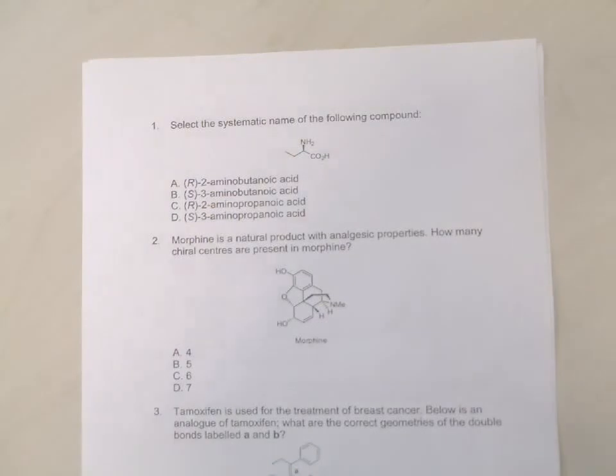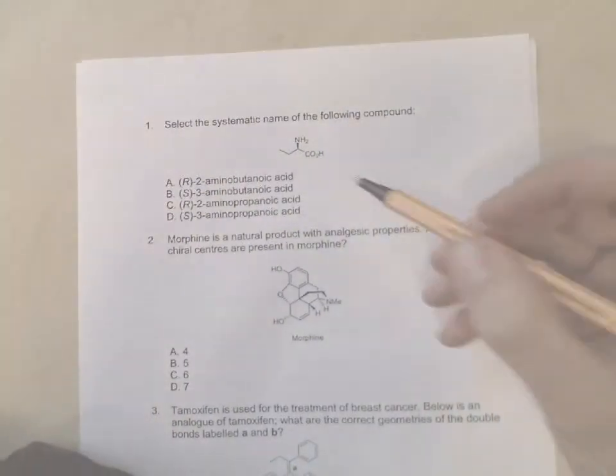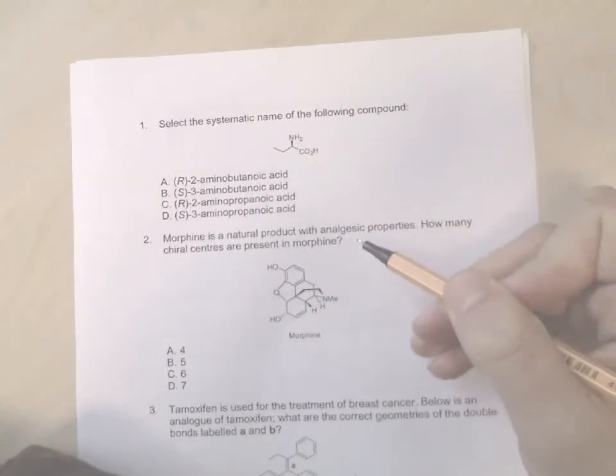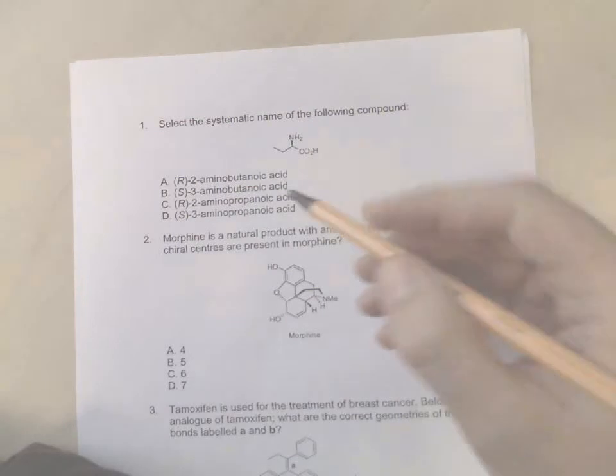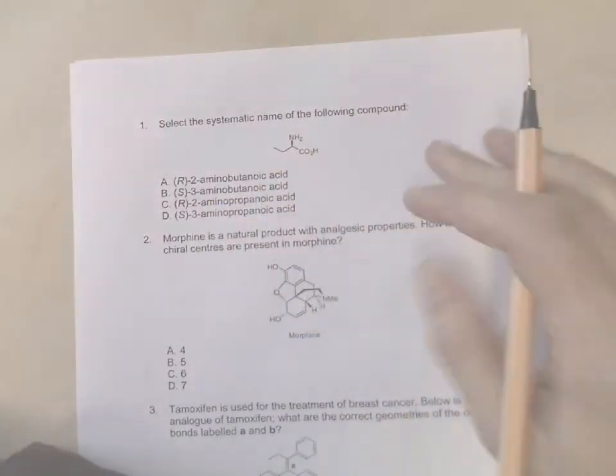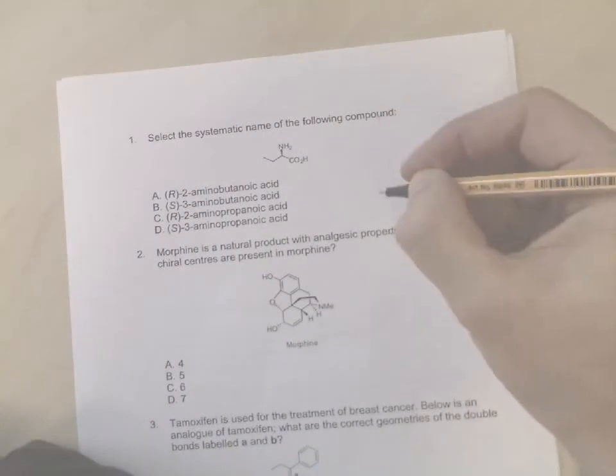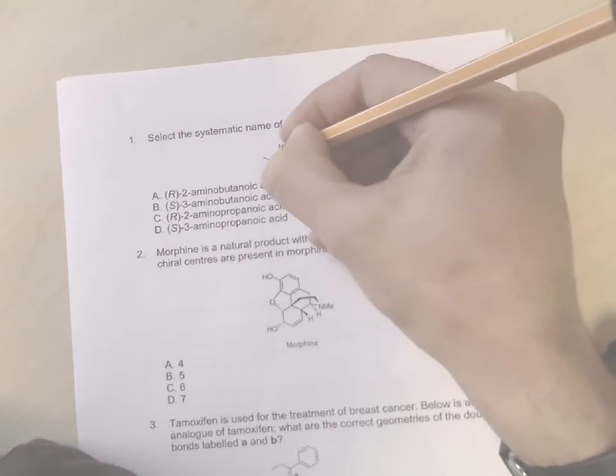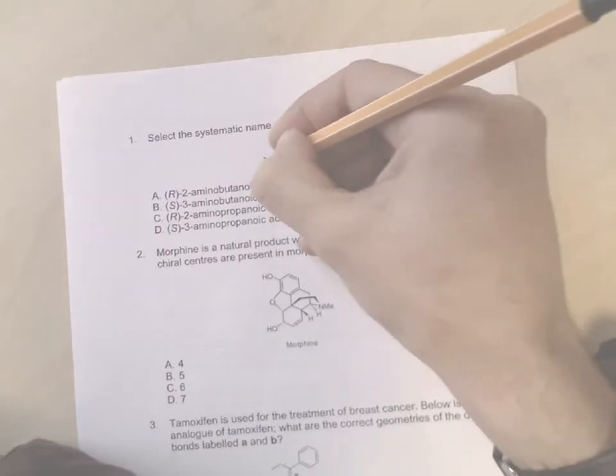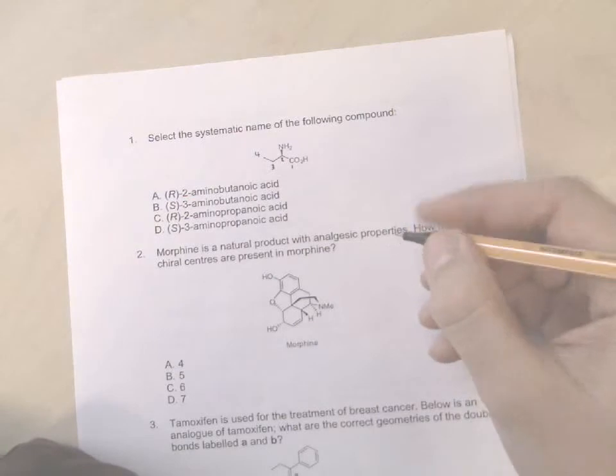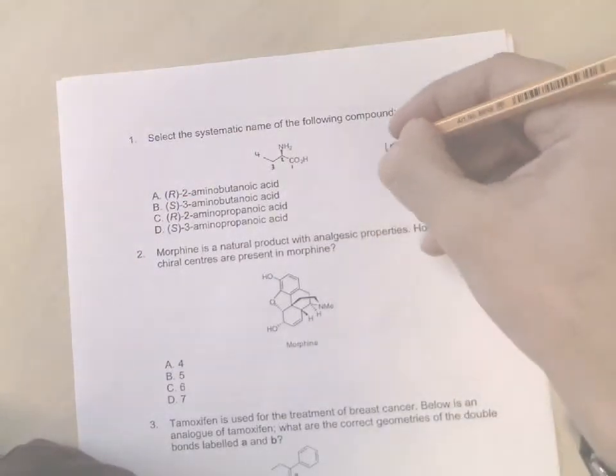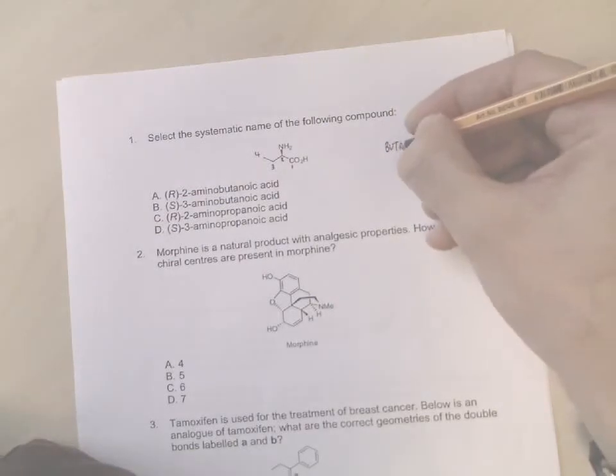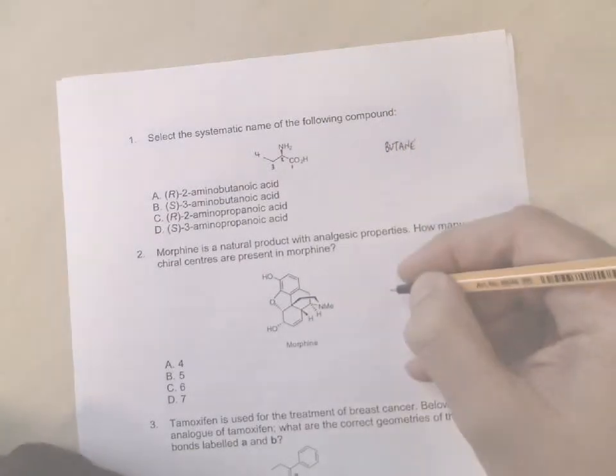So select the systematic name for the following compound. We'll notice that there's a chiral center in this molecule, so depending on what answer you're given, you may or may not have to work out if that's R or S. But first of all, number the atoms from the most oxidized carbon, which is a carboxylic acid. So you have one, two, three, four - four carbons. It's going to be based on butane of some description.